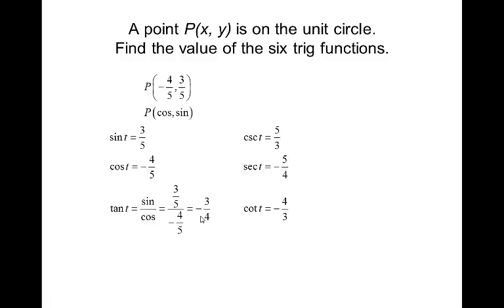When you have the intersection point between the terminal side of an angle and the unit circle, it is in the form of cosine, sine — that is, x, y: cosine x, sine y. I think you've heard me say that a few times.